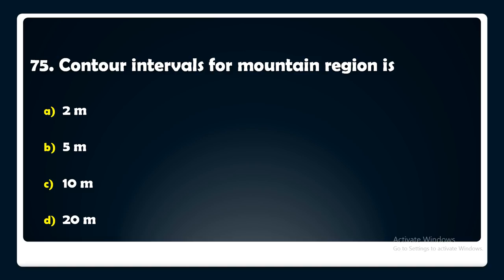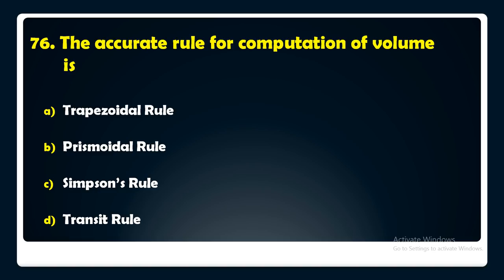The most accurate rule for computation of volume is — trapezoidal rule, prismoidal rule, Simpson's rule, or transit rule? The answer is: the most accurate rule for computation of volume is the prismoidal rule.